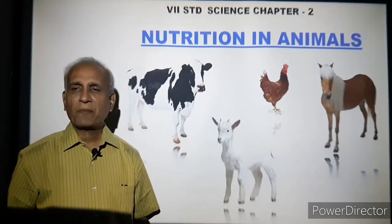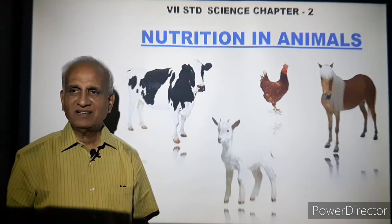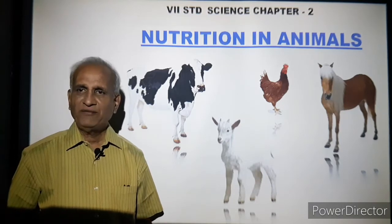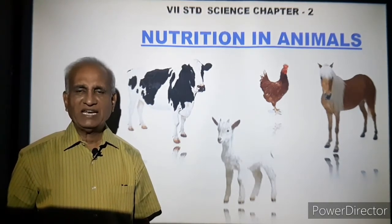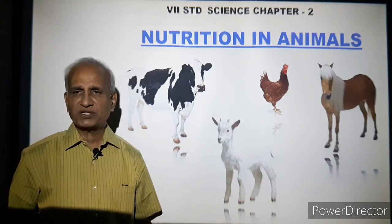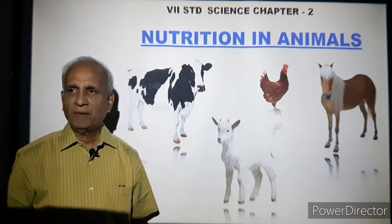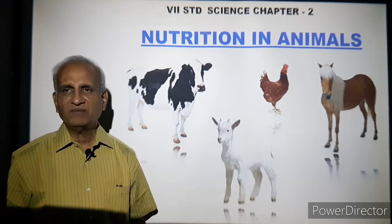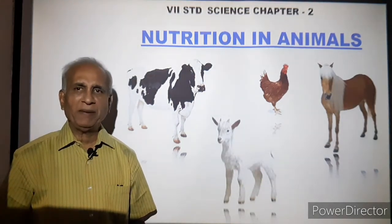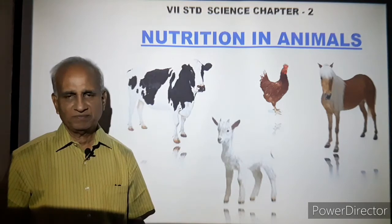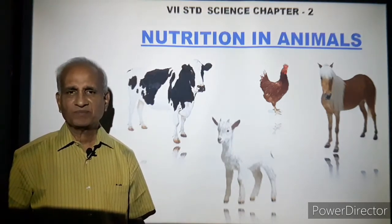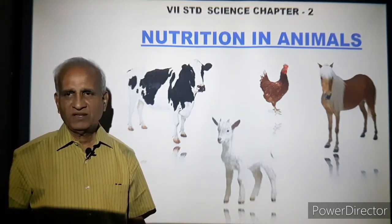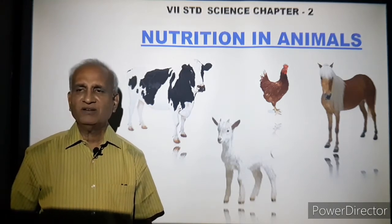Hi! Today we will look at nutrition in animals. The way plants and animals procure food varies. Plants prepare their own food in the presence of sunlight with the help of the chlorophyll pigment present in the leaves. Plants are green — green stands for the chlorophyll pigment. So plants prepare food on their own.